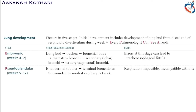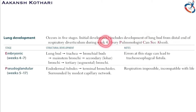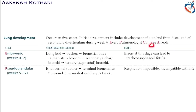Lung development occurs in five major stages. The initial development includes the formation of the lung bud from the distal end of the respiratory diverticulum during week four of gestation. The five stages are: the embryonic stage, pseudoglandular stage, canalicular stage, saccular stage, and the alveolar stage — abbreviated as 'Every Pulmonologist Can See Alveoli.'